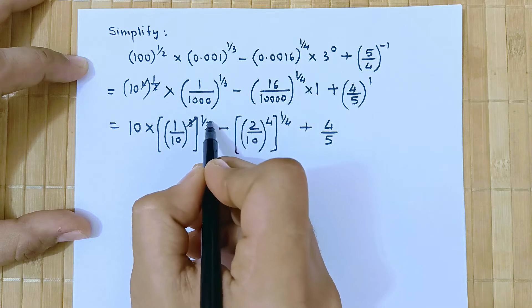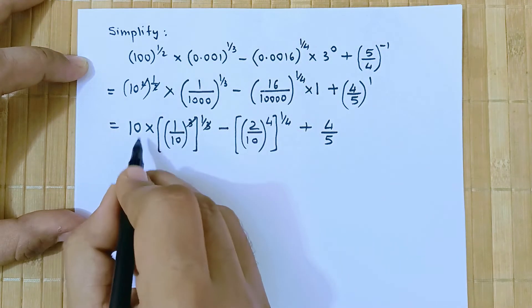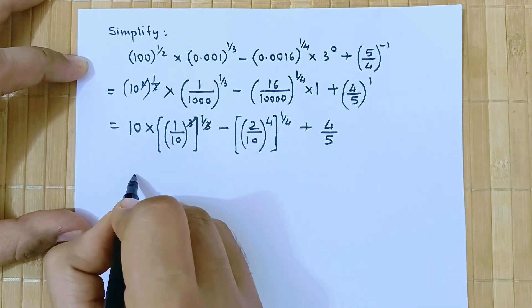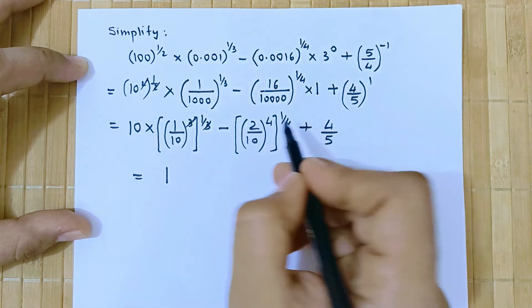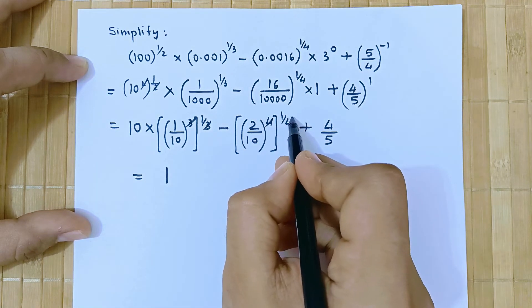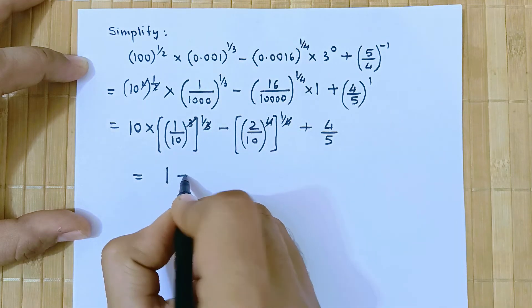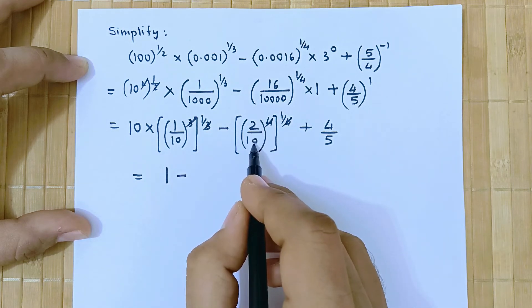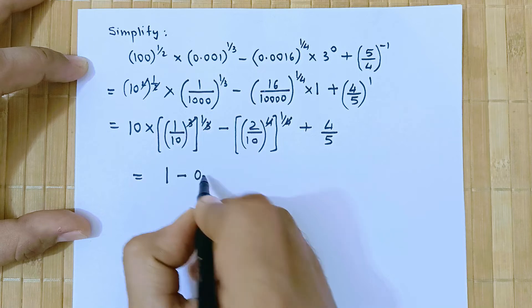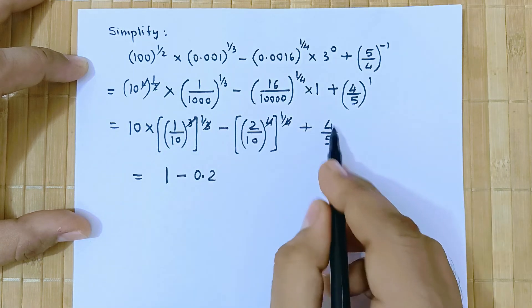Now here 3 and this 1 by 3 cancel out. So we have 10 into 1 by 10 which is equal to 1. Again 4 cancels with this 1 by 4 and this cancel out. So minus, now 2 divided by 10 is 0.2 plus 4 by 5.